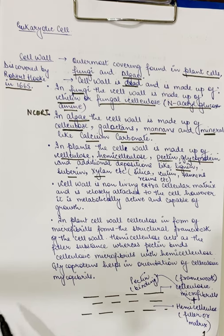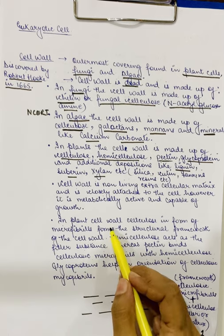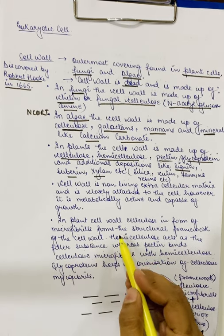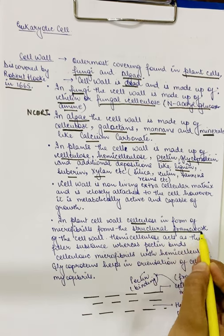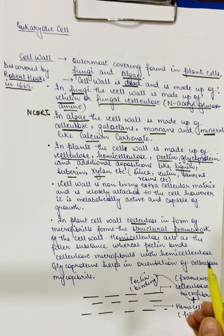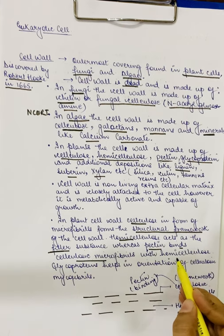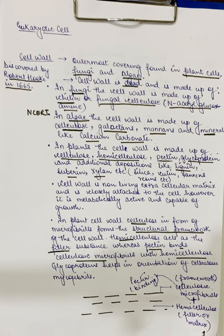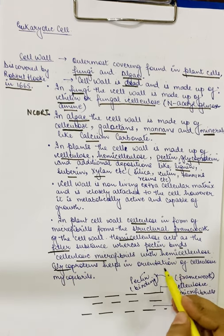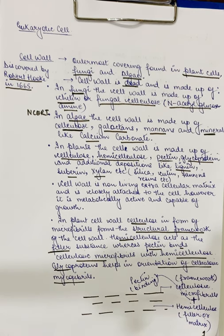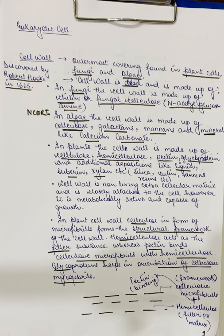The orientation and arrangement of cellulosic microfibrils is determined by glycoproteins. So, in plant cell wall, the cellulose forms the structural framework in the form of microfibrils, hemicellulose acts as a filler substance, pectin binds the cellulosic microfibrils with the hemicellulose, and glycoproteins help in the orientation of the cellulosic microfibrils. So, the plant cell wall is made up of cellulose, hemicellulose, pectin, glycoproteins and water.